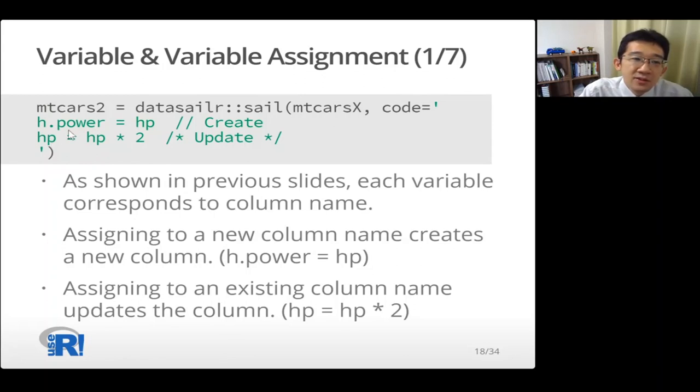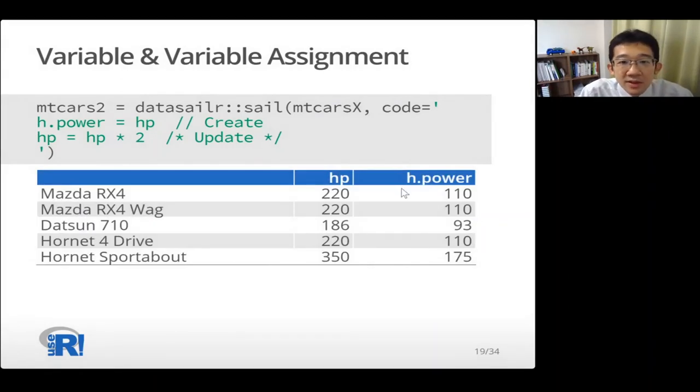So in this case, h.power is a new column name and this new column is created. And this line assigns hp times 2. Assigning the value of hp times 2 to hp. So assigning to an existing column name updates a column. So in this case, hp is updated with the original values of hp times 2. So let's look at the result. Yes, h.power holds the original hp values and hp is updated with hp times 2.